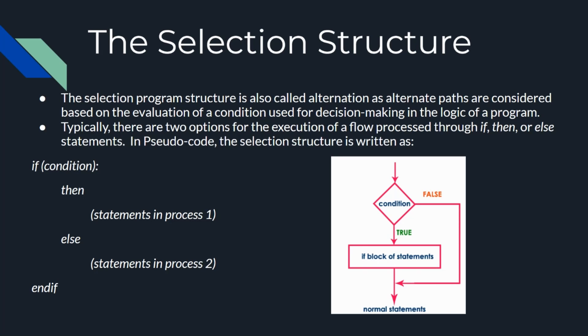The selection program structure is also known as alternation, because alternate paths are considered based on the evaluation of a condition. There are two possible paths for the execution flow — the condition is evaluated, and one of the paths is selected. If the condition is true, the left path is selected and process 1 is performed. If the condition is false, the other process path is selected and process 2 is performed.